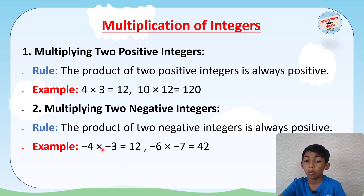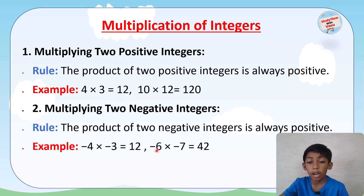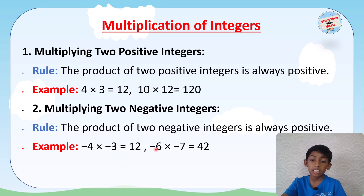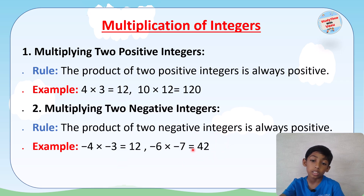Here, because both of them are negative integers, the answer is a positive integer. Next example: (−6) × (−7). Both −6 and −7 are negative integers, and thus the product is always positive.